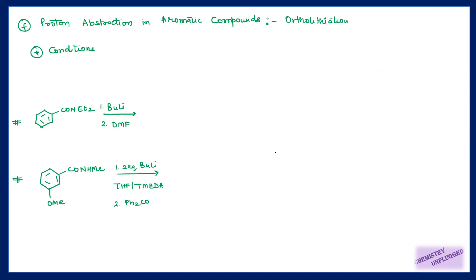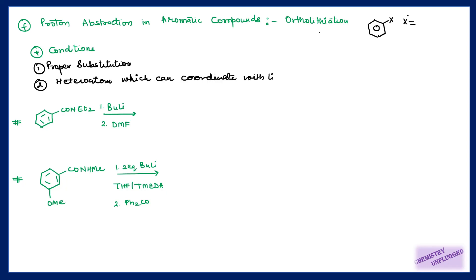Next is the fifth type, which is also very important: proton abstraction in aromatic compounds, called ortho-lithiation. When you have a properly substituted group in your aromatic compound, this group X should have a heteroatom which can coordinate with lithium. These groups are called directed metalation groups. They all have heteroatoms — a lone pair of electrons — and they can coordinate with lithium, which makes this reaction possible.